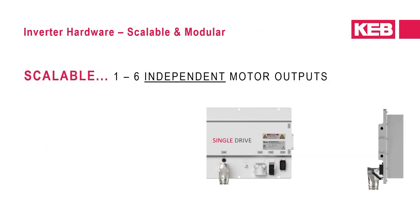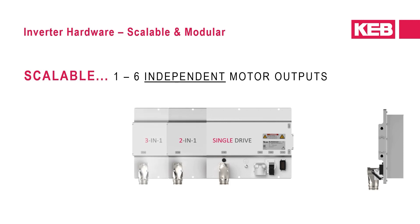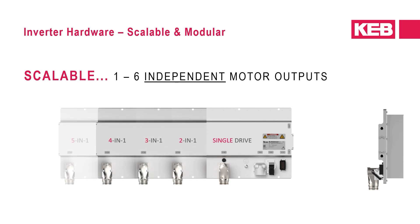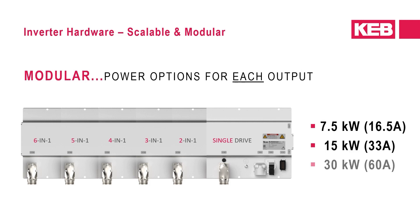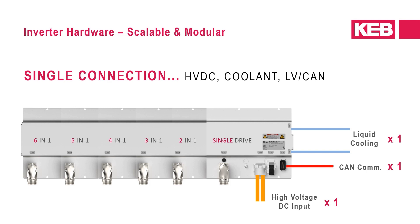Since a vehicle can have multiple auxiliary loads, the T6 was designed as a scalable and modular system solution. A system can be scaled from a single inverter output circuit up to six independent inverter outputs. There are three power ratings for each output stage: 7.5, 15, and 30 kilowatts continuous. From a system standpoint, there is a single high voltage DC supply connection, a single coolant circuit, and a single low voltage connection which also includes the CAN bus.